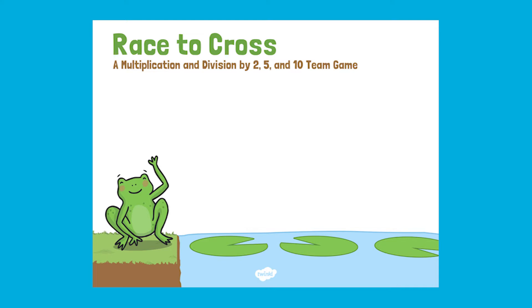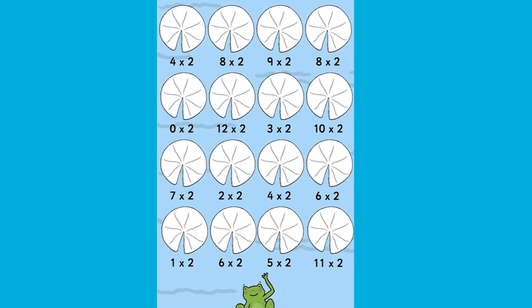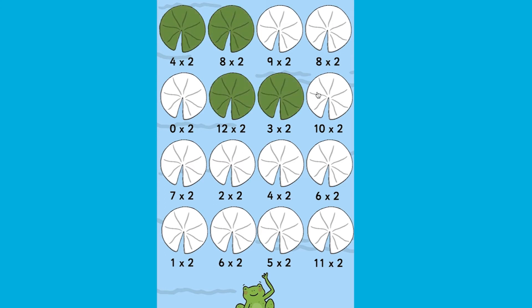One of the activities that your child can have a go at is this Race to Cross game. Move horizontally or vertically from start to finish by answering questions correctly. Simply click on the lily pad they have chosen and it will change colour to map their journey.